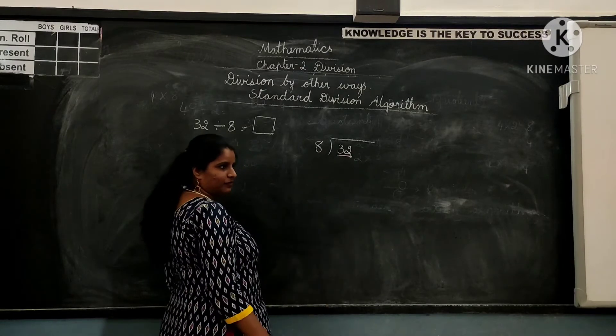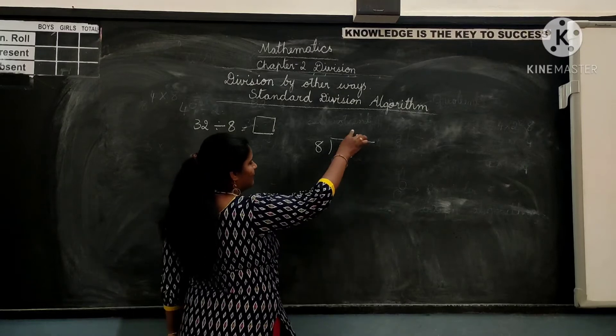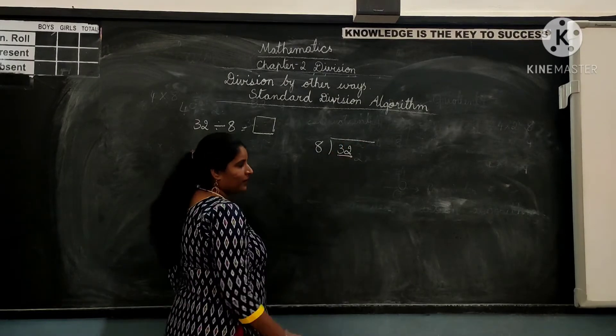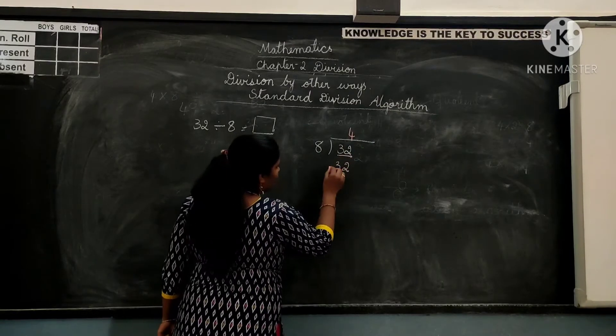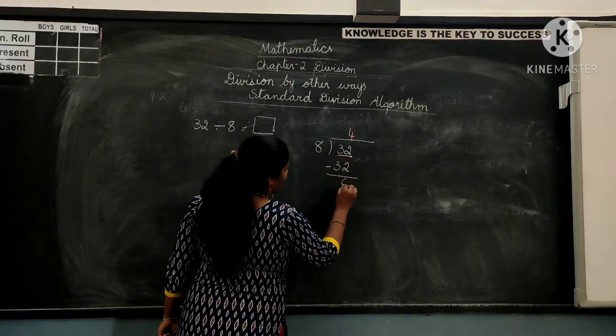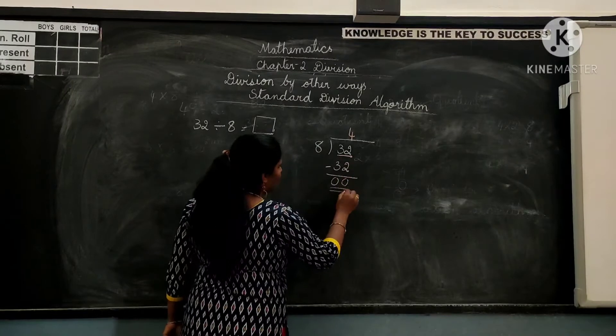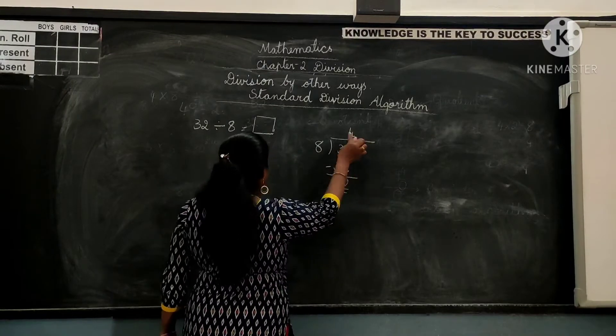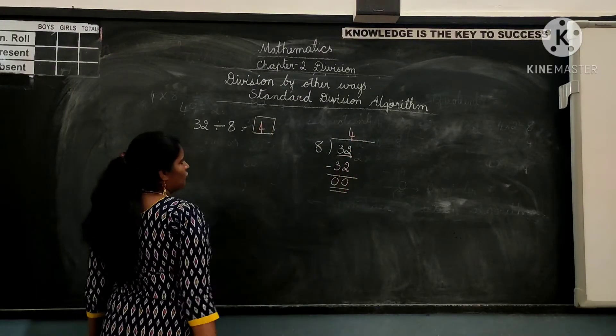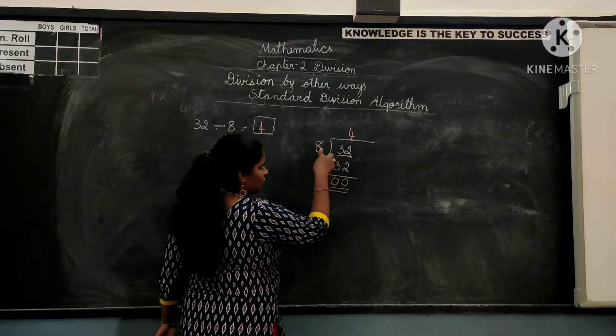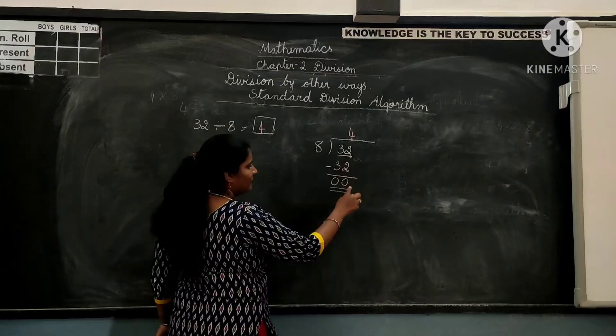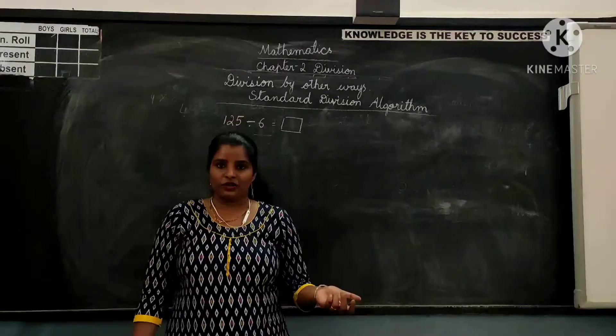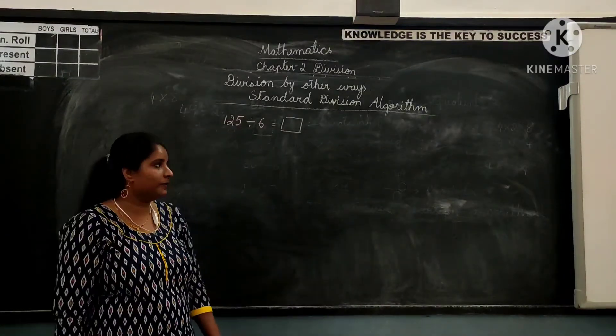Now the digit becomes 32. And you are dividing by 8. 8 how many times gives you 32? 8 four times gives you 32. The answer after subtraction will give you 0. So each friend will get 4 chocolates. 4 is the quotient, 8 is the divisor, 32 is the dividend, and 0 is the remainder.